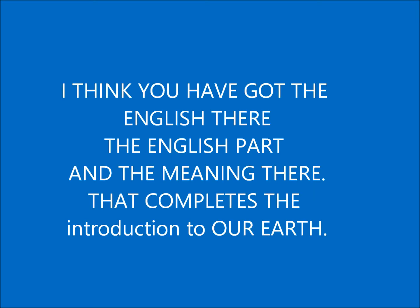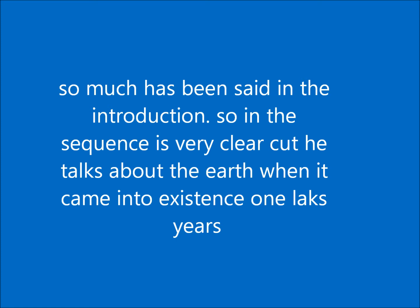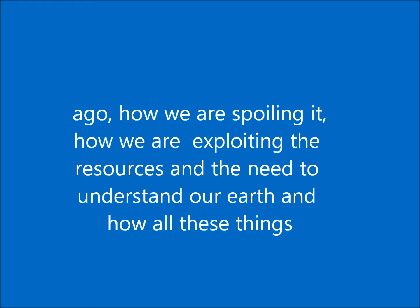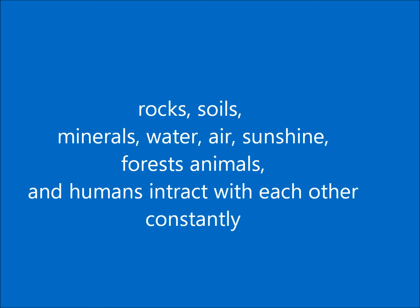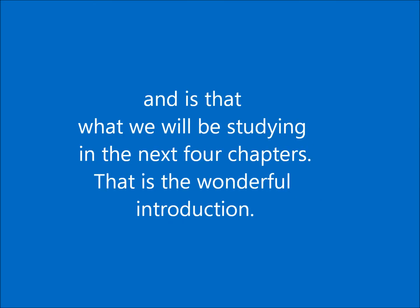That completes the introduction to 'Our Earth.' The sequence is very clear: it talks about the earth, how human beings arrived about one lakh years ago, how we are spoiling and exploiting the earth's resources, the need to understand our earth, and how rocks, soils, minerals, water, air, sunshine, forests, animals and humans interact with each other constantly — which is what we will be studying in the next four chapters. That is a wonderful introduction, and now we go to the next unit.